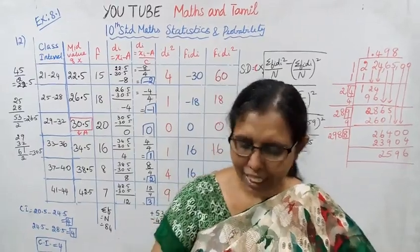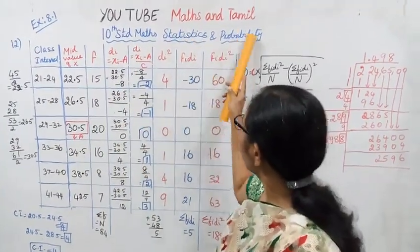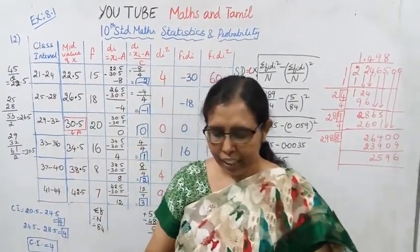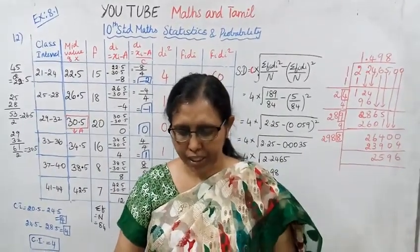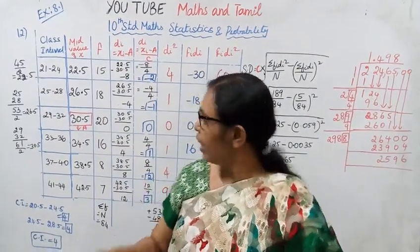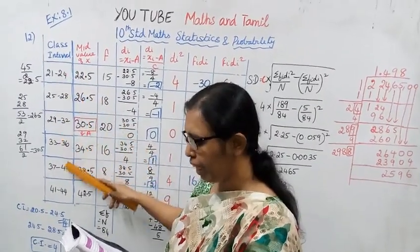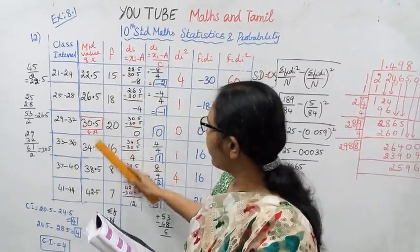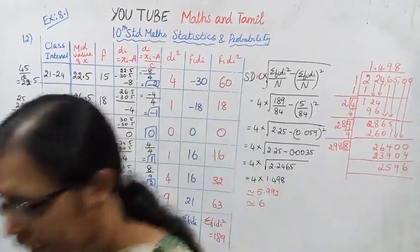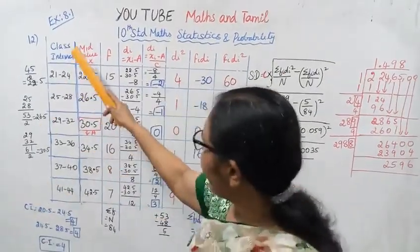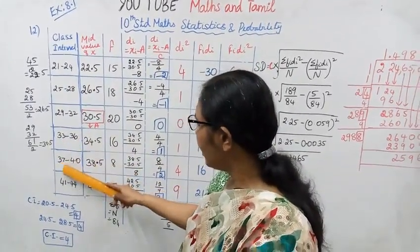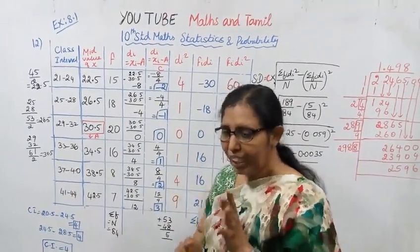Hello students, welcome to Max and Tumult channel. We have 10th standard Maths statistics and probability class. Exercise 8.1, problem number 12. The measurements of the diameters in centimeters of the plates prepared in a factory are given below. Find its standard deviation. The class intervals for diameter are: 21-24, 25-28, 29-32, 33-36, 37-40, and 41-44.